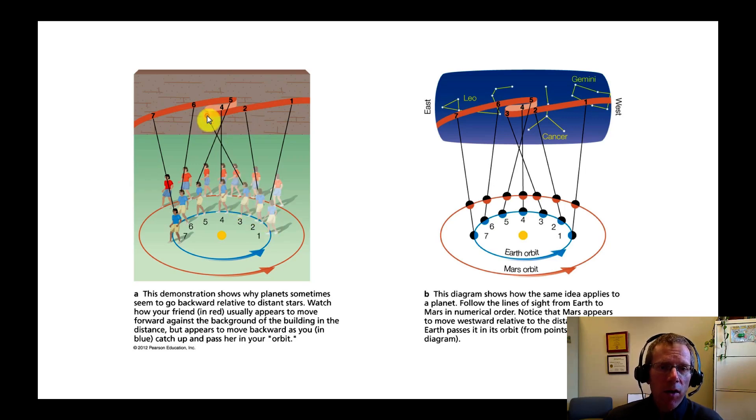But as the person in the blue moves to position four, they're actually passing up the person in the red. So notice how that person appears to be going backwards. Position five, same sort of thing. The person in red appears to be going backwards compared to the person in the blue. By the time the person in blue has completely passed the person in red, then that person in red starts appearing to be moving forwards again. So while the person in blue is passing up the person in red, that is called retrograde motion.